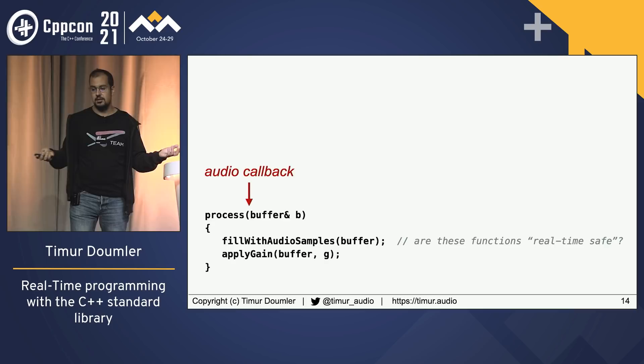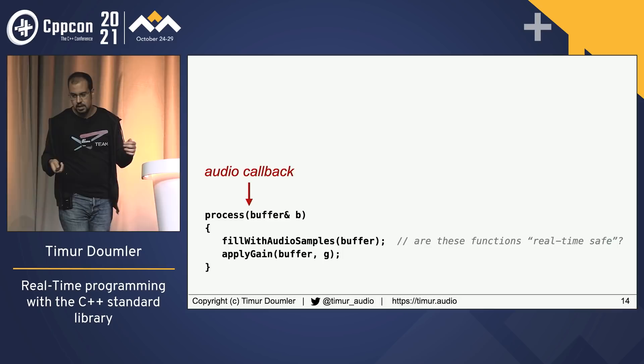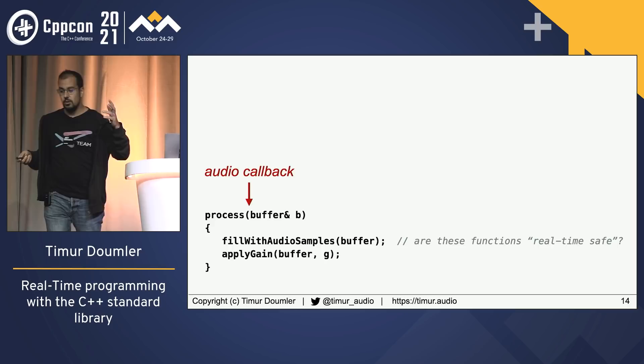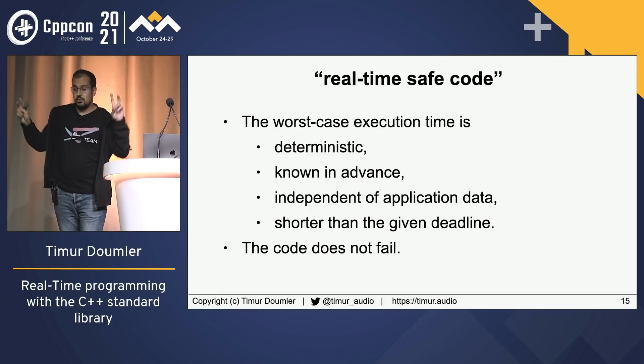You're going to call functions in that callback — generate some audio samples, apply gain. The question is: can you call those functions inside this callback without causing an audio glitch or missing your deadline? In other words, are these functions real-time safe? That's the term we'll use throughout this talk.